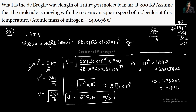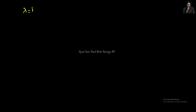Now we need to find the wavelength. Lambda equals h divided by p, where p is momentum = mass × velocity. Substituting: h = 6.63 × 10⁻³⁴, divided by mass of nitrogen (28.0152 × 1.66 × 10⁻²⁷, which gave us 46.50) multiplied by velocity 519.6.